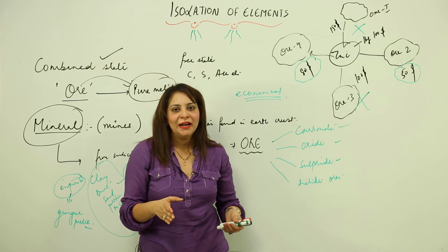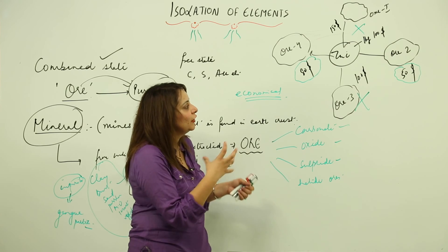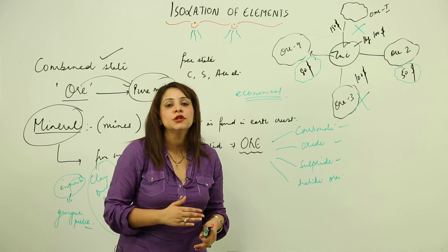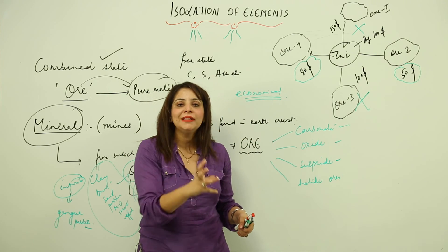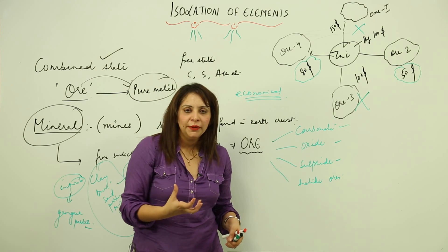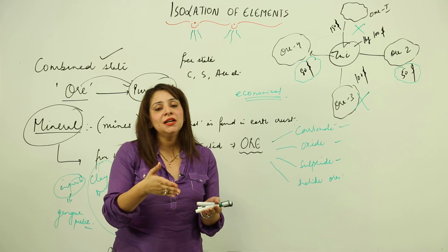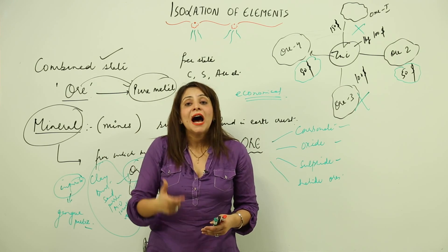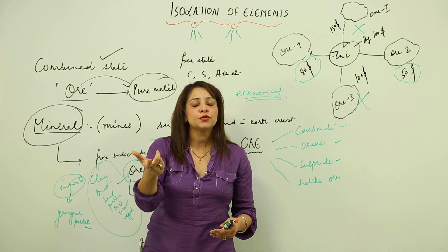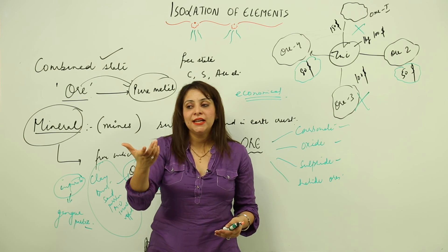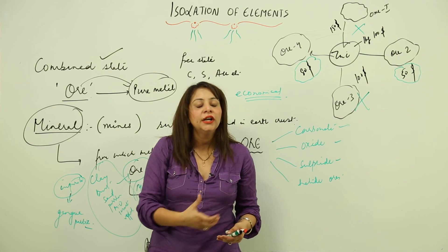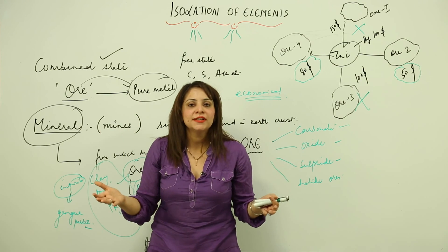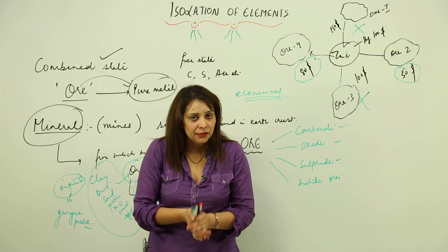Quality also matters, but we are always in search of the economical method. We will select only those ores which are cheap and economical. A metal may occur in many types of ores, but the main ore considered important is the one from which the yield is good, the quality is good, and the process is economical, so that industries can also make a profit.